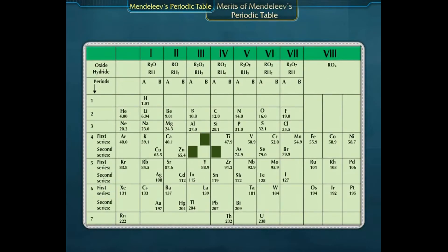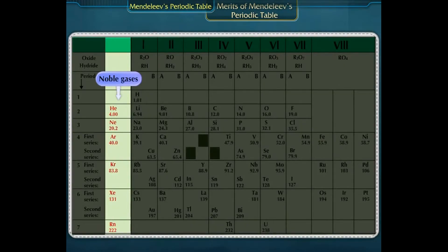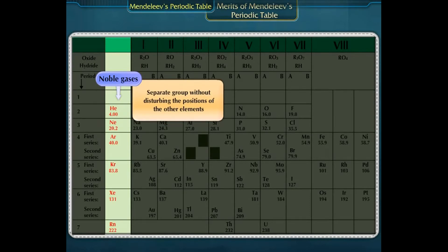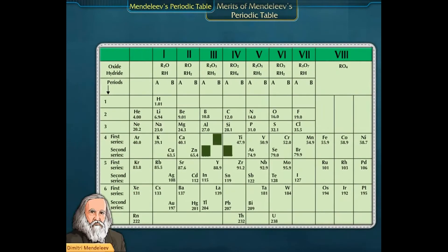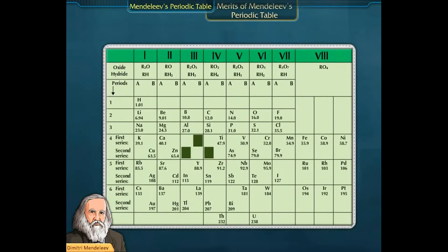Another merit was that when noble gases were discovered later, they could be accommodated in the periodic table in the form of a separate group without disturbing the positions of the other elements. Although Mendeleev was the first scientist who successfully classified all the known elements, there were some demerits of his periodic table.